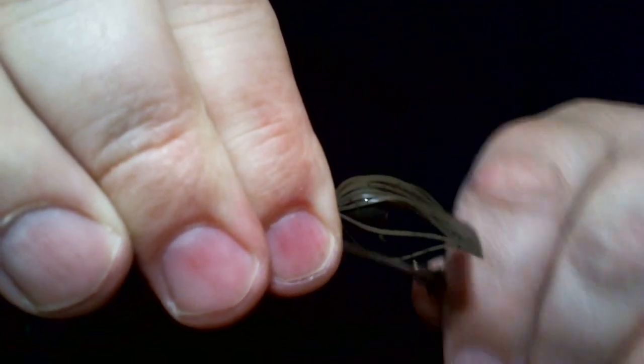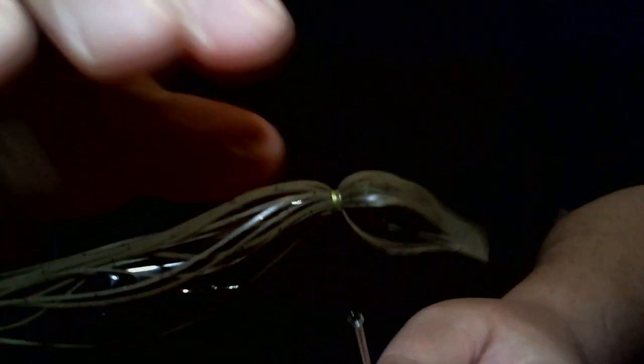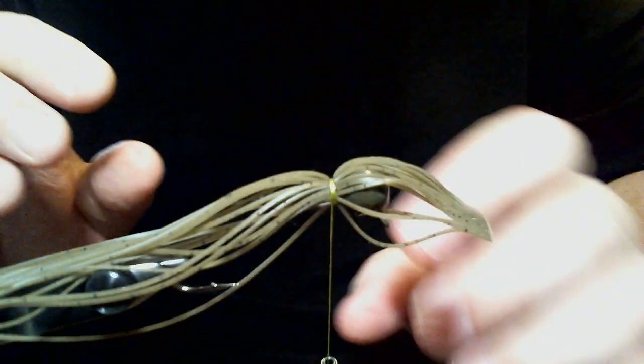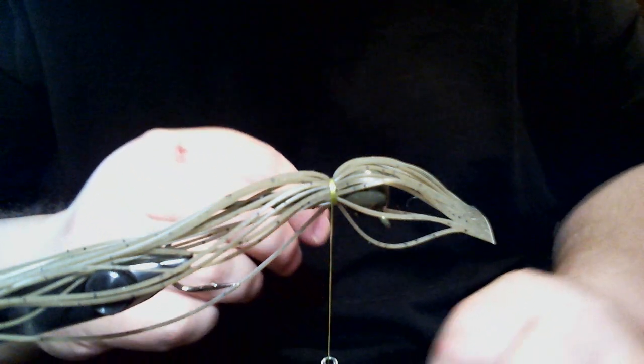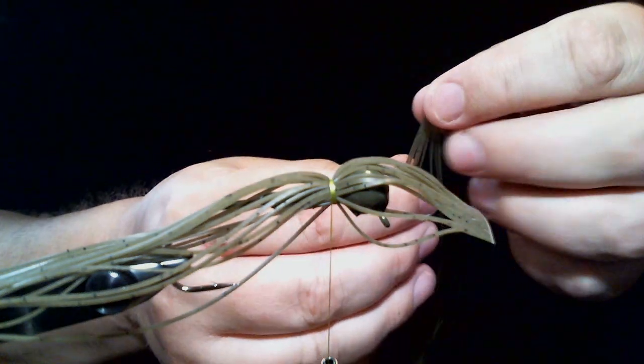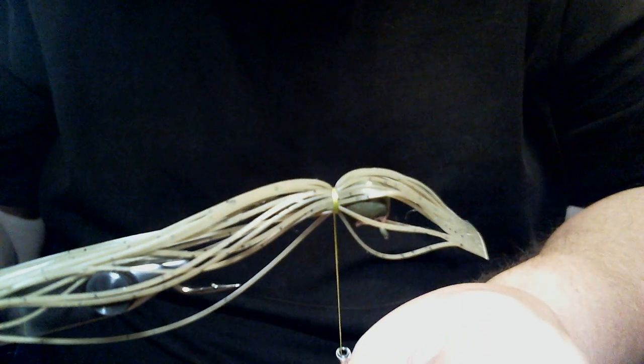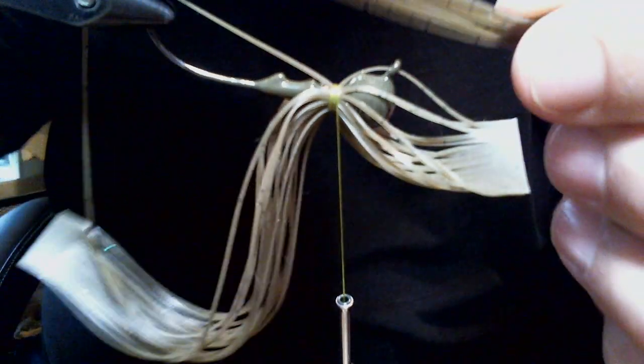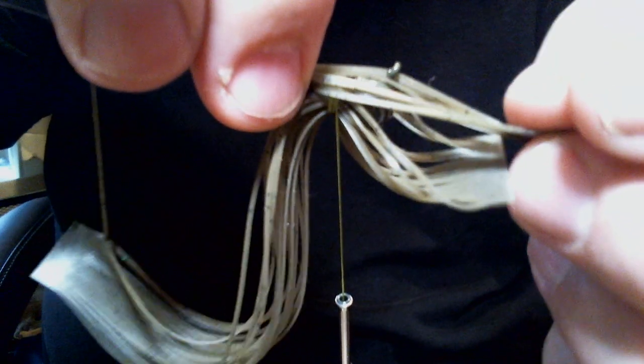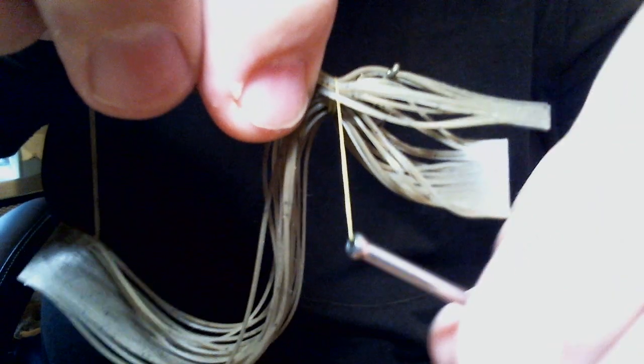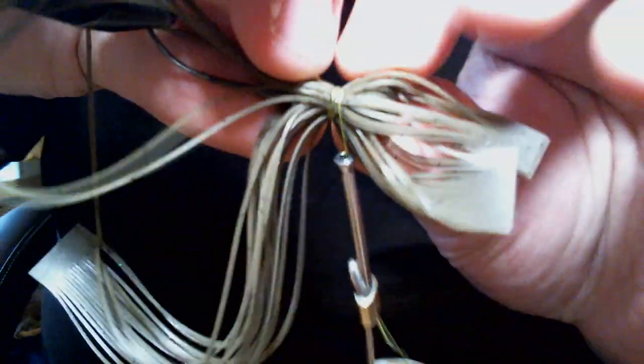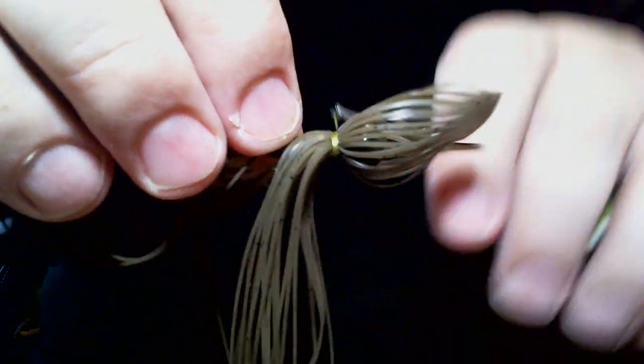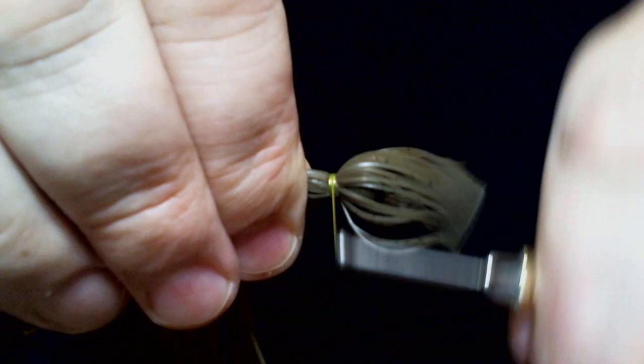Now, the reason I wanted to do this is this is one of those things where a lot of guys use accent colors and they get a little carried away. It's a little heavy handed where with this type of jig, you can add another color and really make the jig change total appearance. But you're not adding a lot. It's just very little. But the effect is pretty dramatic. You'll see what I mean once we get our green pumpkin silicone tied in here.